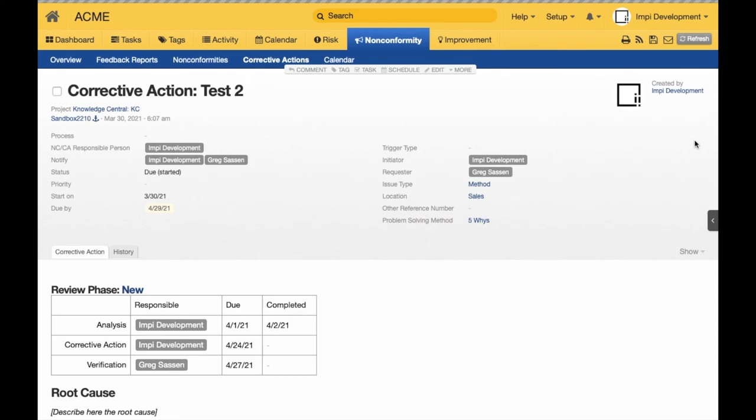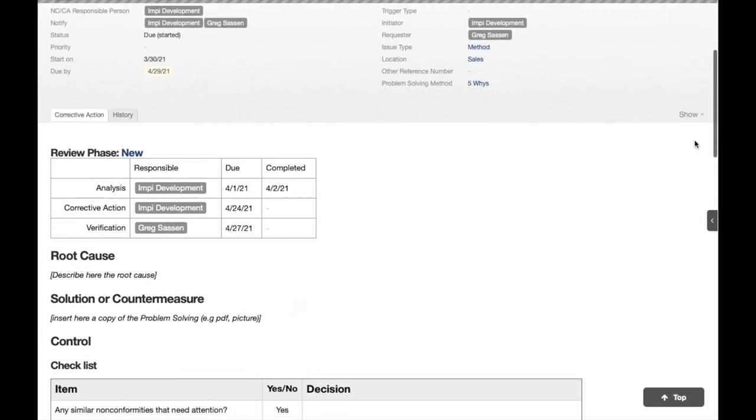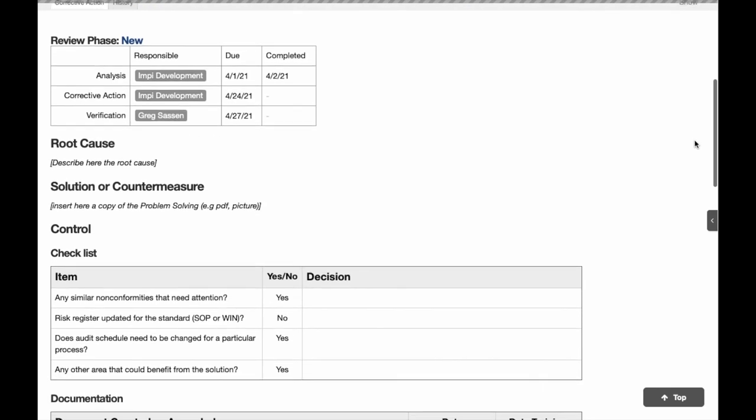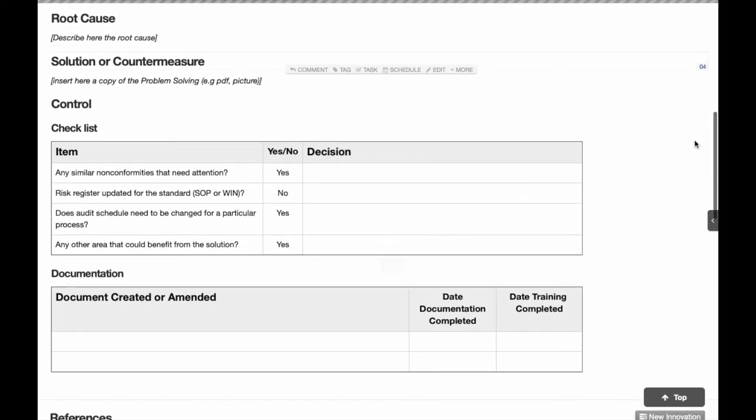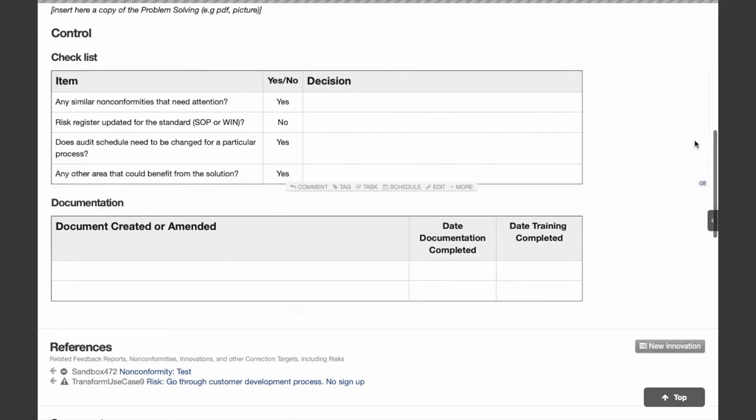The corrective action form is a repository of the problem-solving process where the root cause is identified using the method of choice. The motivation for the countermeasure or solution is also there, and the verification of its effectiveness to address the root cause.